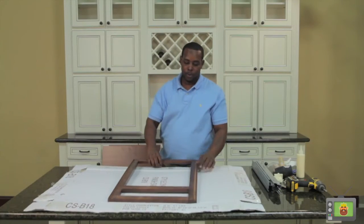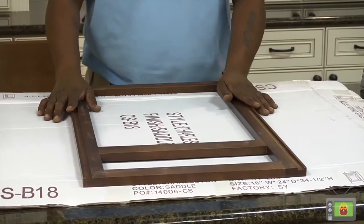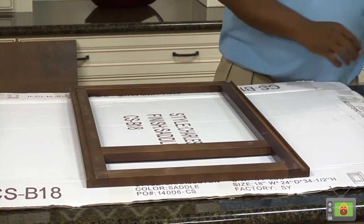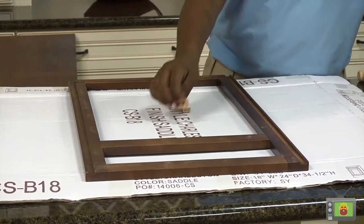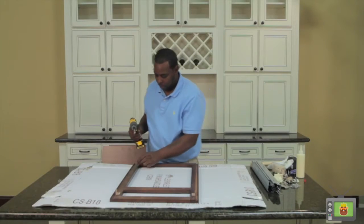Start the cabinet construction by placing the face frame of the cabinet face down on your working area with the bottom dado closest to you. The face frame has pre-drilled dados located on the sides and bottom to accommodate the panels.